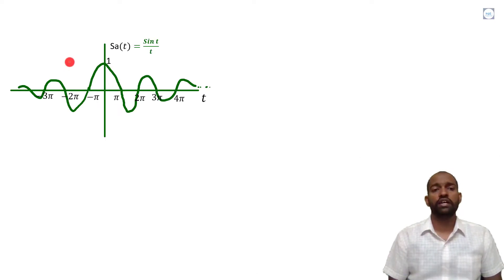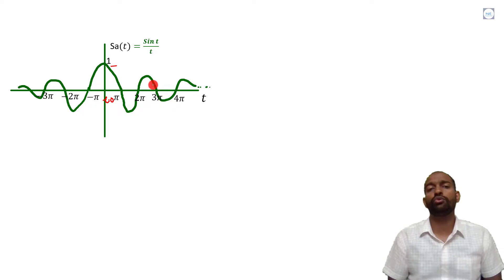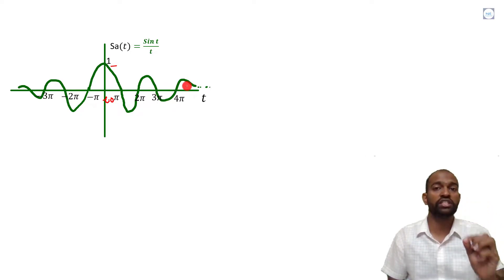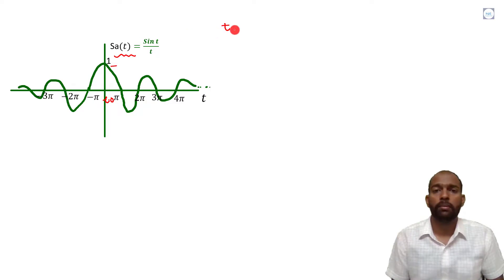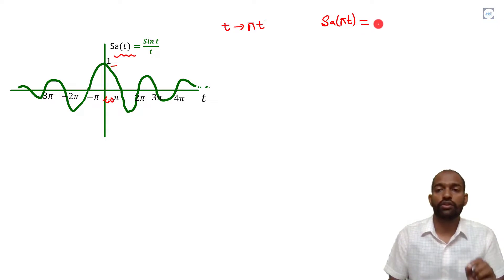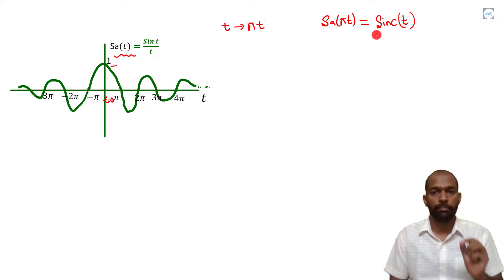Sampling function — we already know from our previous lecture — has a peak amplitude of 1 at t equal to 0, and its value is similar to a sine function but its amplitude is decreasing towards 0. So, similar to our sampling signal, to get the sinc function, we just have to replace t with pi*t. If I write sampling(pi*t), it will be equal to sinc(t). So, sinc function is sampling(pi*t).